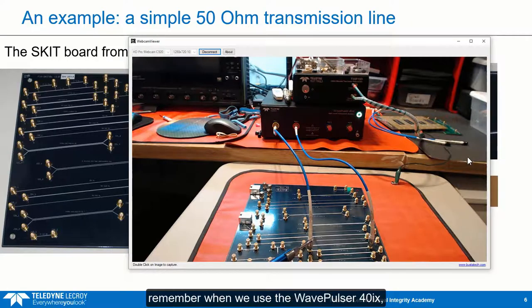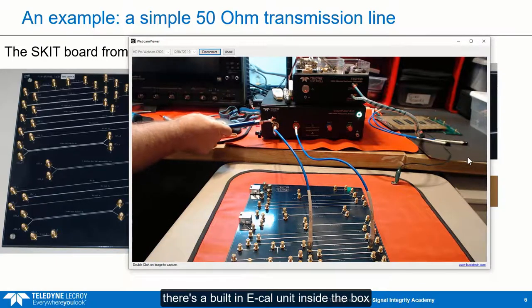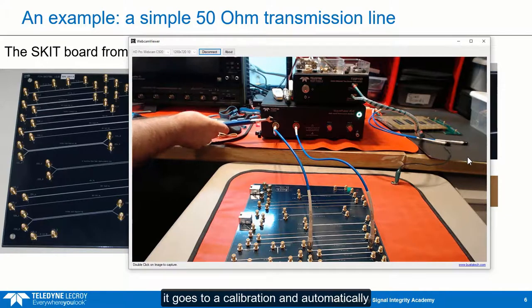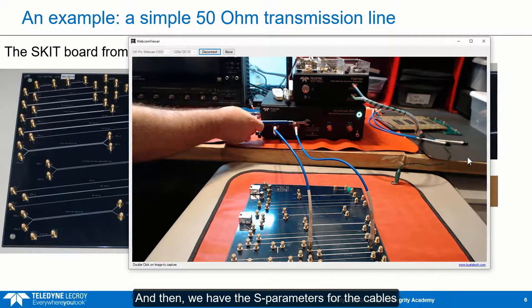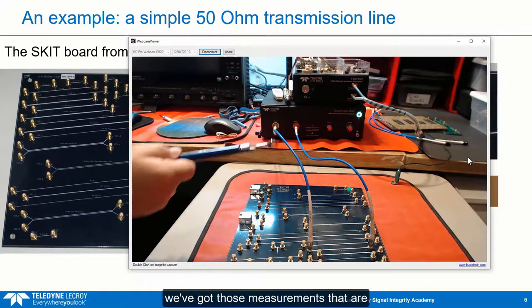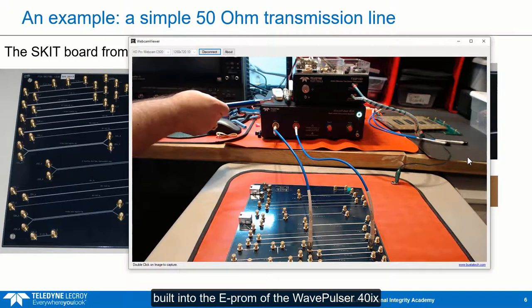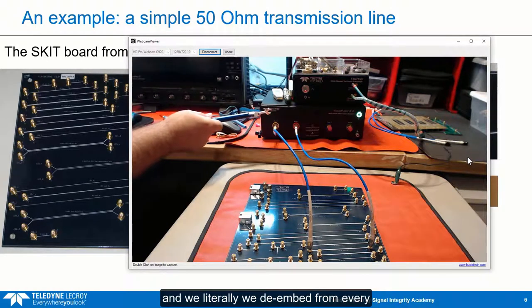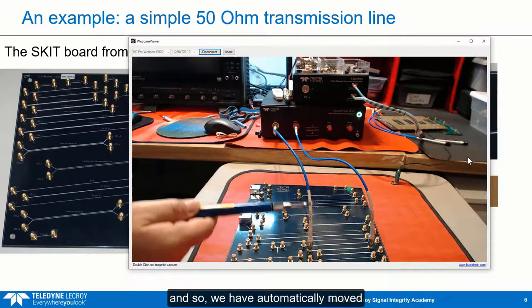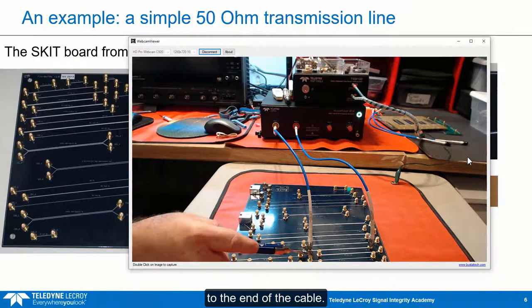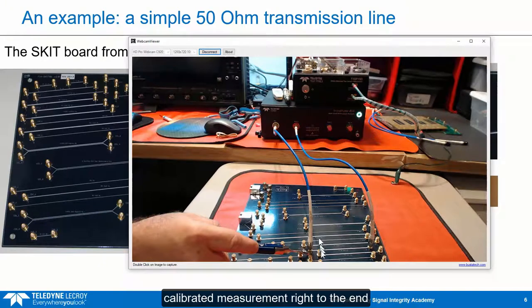So we've got the cables hooked up. When we use the WavePulsar 40IX, there's a built-in ECAL unit inside the box. When we turn it on, it goes through a calibration and automatically brings the reference port to the beginning of the connectors on the front of the box. We have the S-parameters for the cables — they're all serialized and stored in the EEPROM of the WavePulsar 40IX. We de-embed from every measurement the S-parameters of the cable, so we have automatically moved the reference plane of the measurement to the end of the cable — right where the cable connects to the SMA on the device under test.